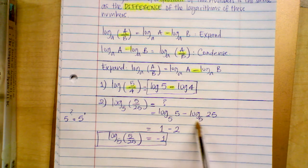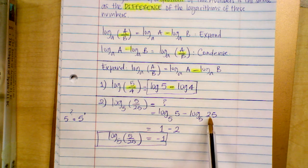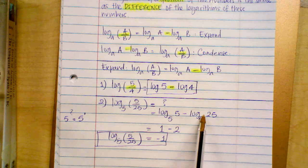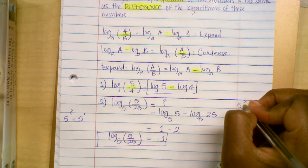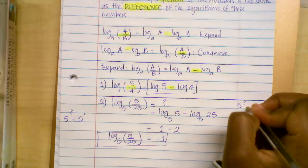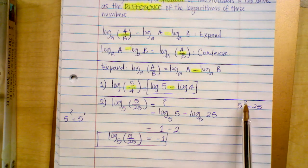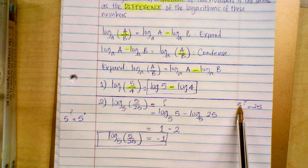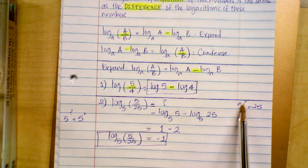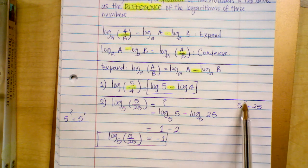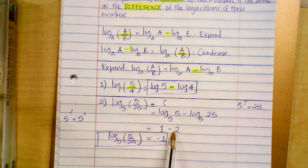For the second term, log base five of 25 means: what exponent do you give to base five so that the answer is 25? Five squared is 25, so the exponent is two. That's why I wrote two here. Now we subtract: one minus two equals negative one.